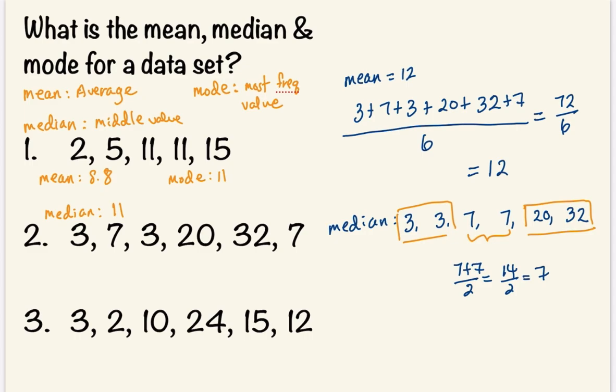When we have an odd number of values, like the first example, there were five numbers here. The median is just going to be one number. So our median in this case is 7.